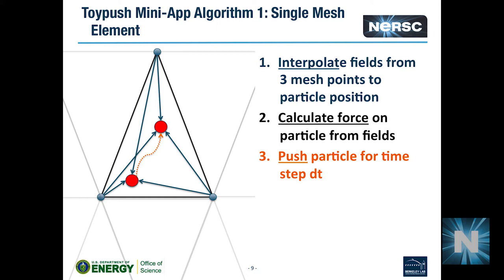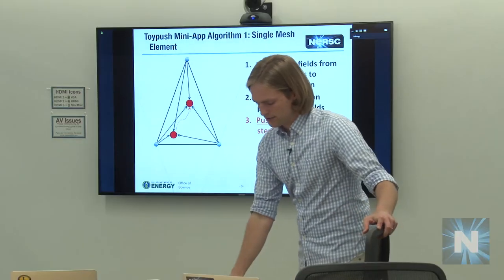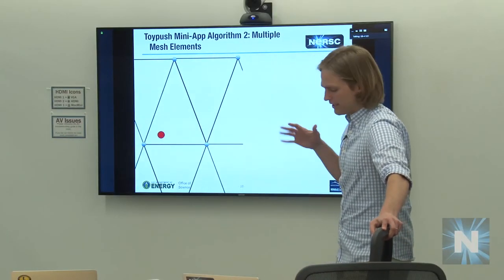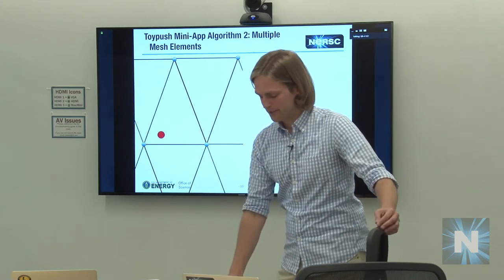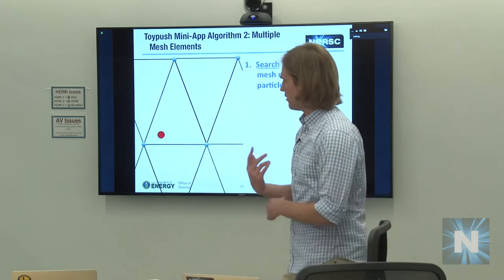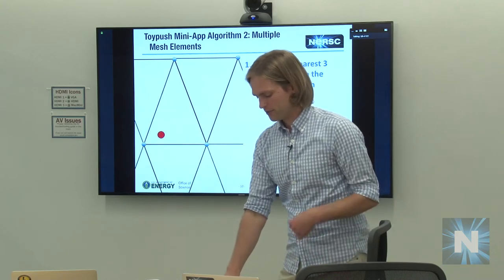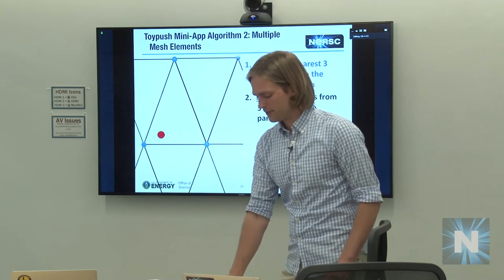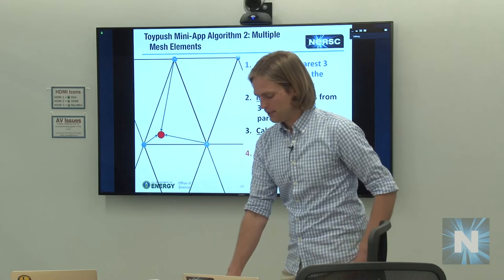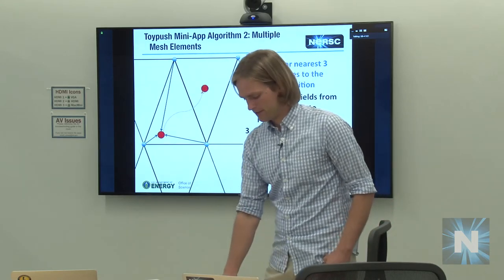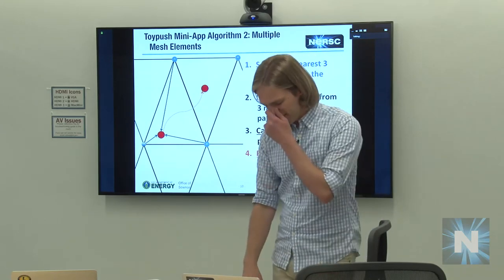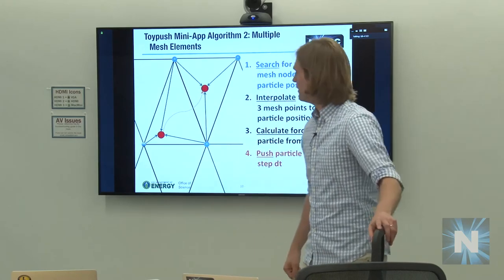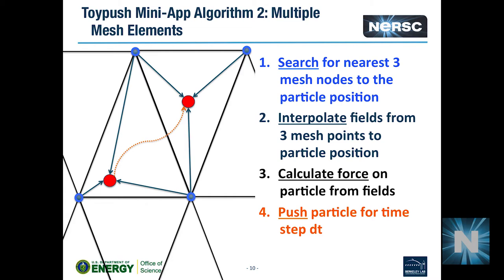The simple single-triangle case avoids the trouble of figuring out how you move between cells. We have another version containing multiple mesh elements, where you get into the issue of indirect or irregular memory accesses. There's an extra step where you first have to figure out which cell you're in — doing a search to find your nearest three nodes, using those to interpolate the fields and move the particle — but then you might move into a different cell and have to search again for your new nearest three nodes.